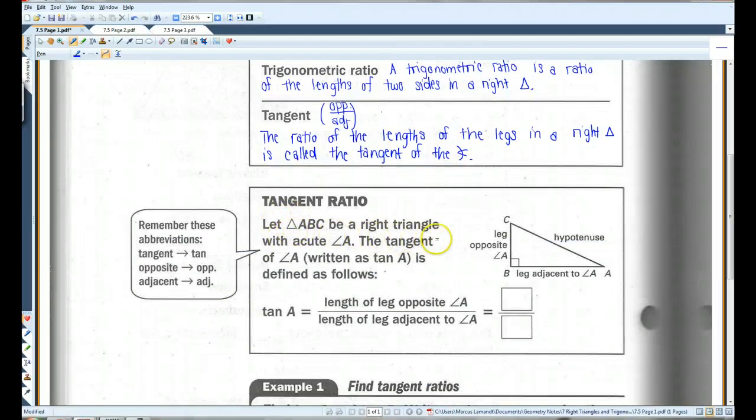If triangle ABC is a right triangle with acute angle A, there you go, this side is opposite A. The side that does not touch the angle is the opposite side. Of course, the longest side is the hypotenuse.